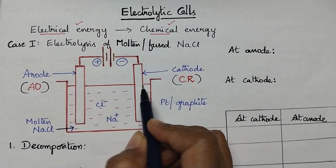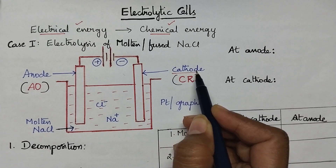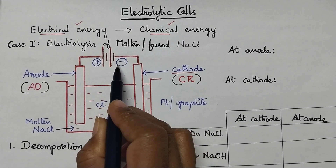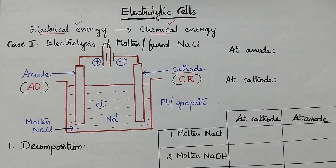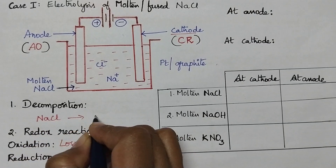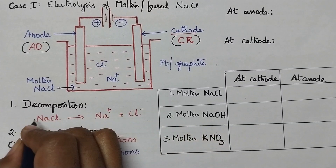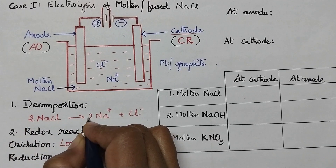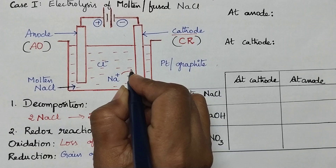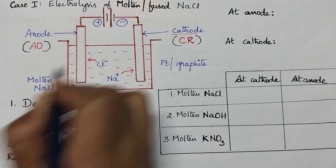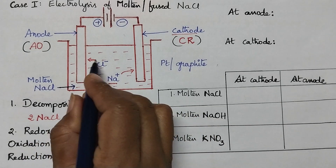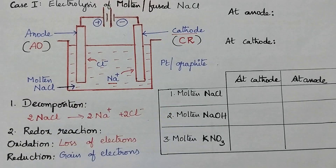Whereas the electrode present on the right hand side acts as the cathode and it is connected to the negative terminal of the battery. So whenever these two electrodes are connected to the battery then the decomposition of the electrolyte takes place. In this case the NaCl dissociates into Na⁺ and Cl⁻ ions. During electrolysis the cations will migrate towards the cathode and the anions will migrate towards the anode. So sodium ions will migrate towards the cathode whereas the Cl⁻ ions will migrate towards the anode, which results in a redox reaction.